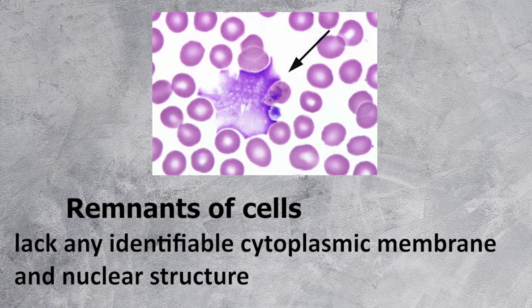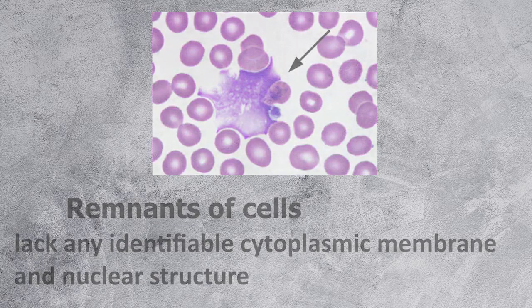Sometimes only beyond — nuclear material — is seen. Smudge cells in patients with chronic lymphocytic leukemia are ruptured B-cell lymphocytes, but are indistinguishable morphologically from other degenerated lymphocytes.